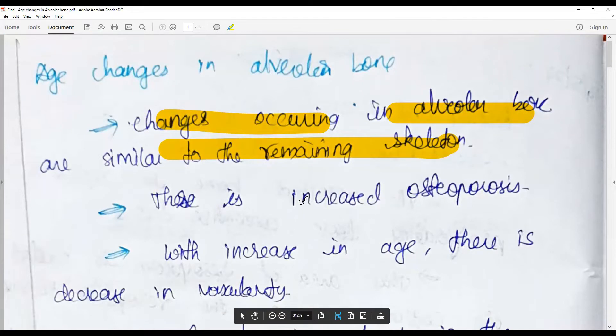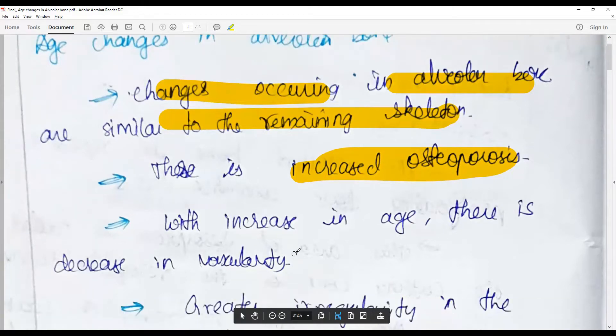Like with any other bone, with increasing age there is an increased risk of osteoporosis. Since the alveolar bone height and the density of the bone may be reduced by the absence of calcium.